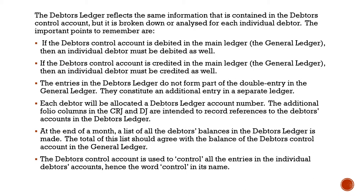The debtors ledger reflects the same information contained in the debtors control account, but it is broken down for each individual debtor. The important points to remember are: if the debtors control account is debited in the general ledger, then the individual debtor must be debited as well. If the debtors control account is credited, then the individual debtor must be credited as well. The entries in the debtors ledger do not form part of the double entry — they constitute an additional entry in the separate ledger.